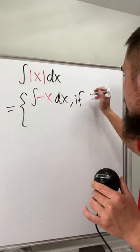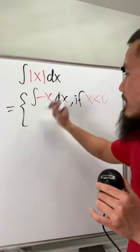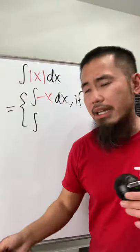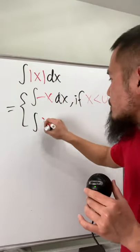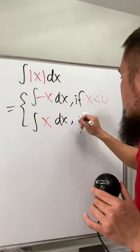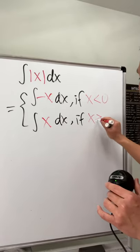So let's indicate that this is when x is less than 0. And then secondly, well, we know absolute value doesn't matter if x is positive or 0. So we'll just put down x right here and then dx, and then this right here is if x is greater than or equal to 0.